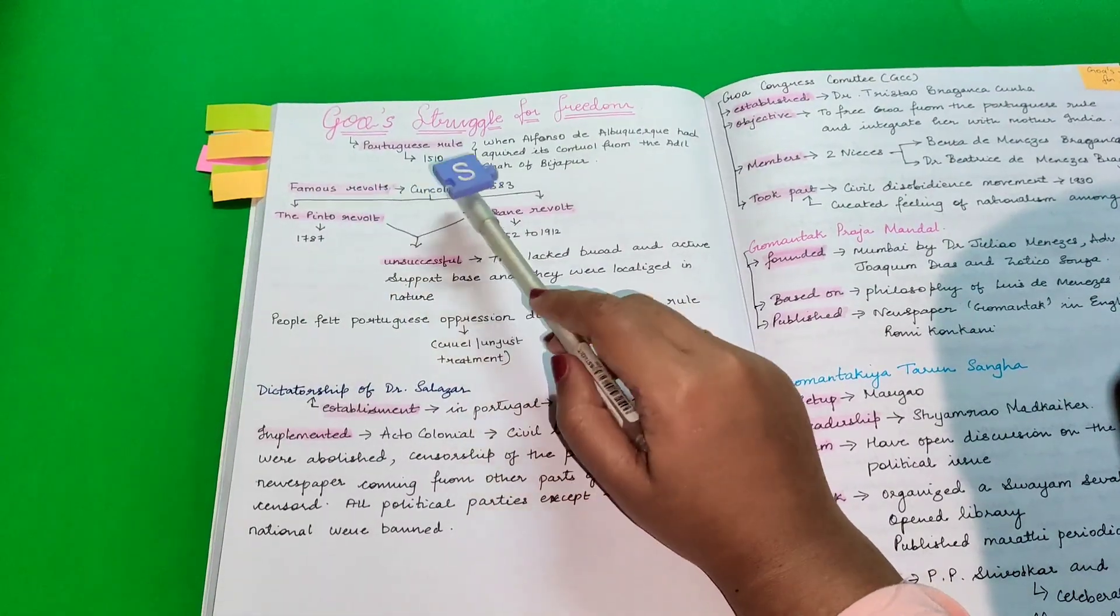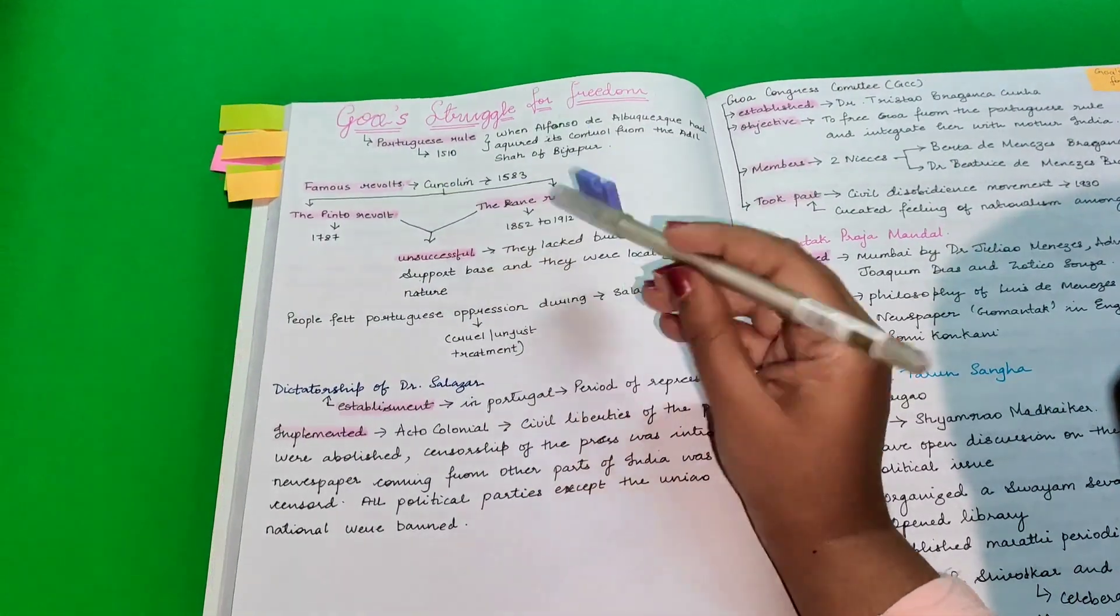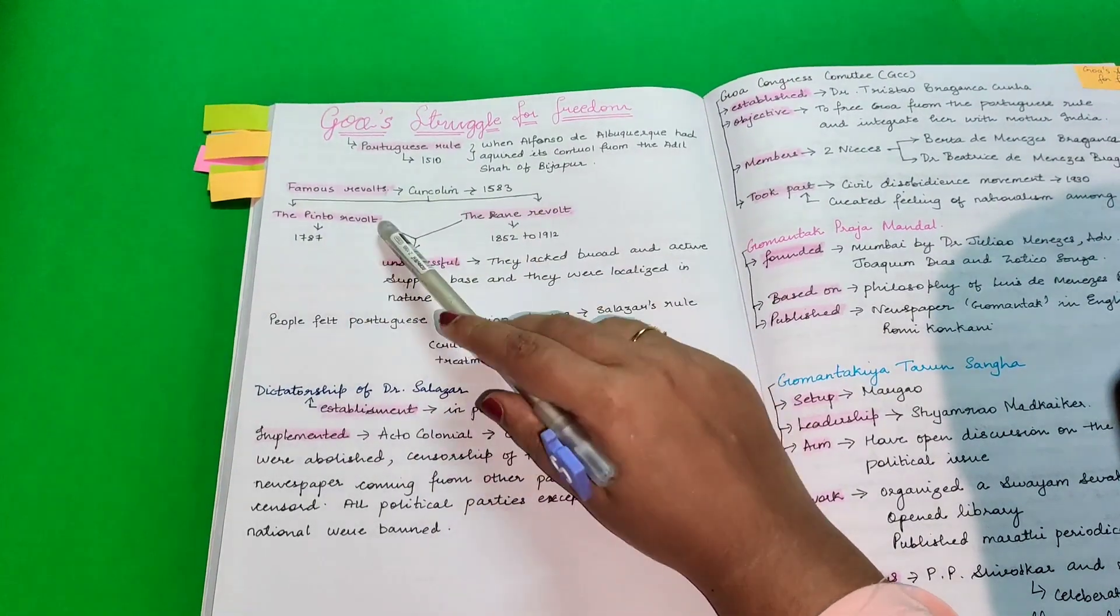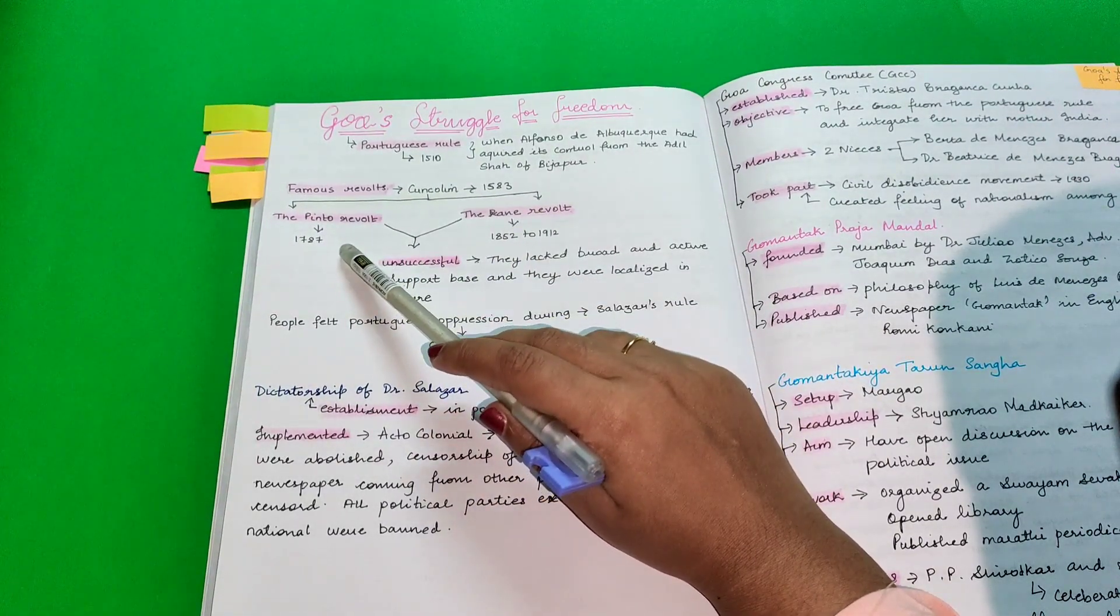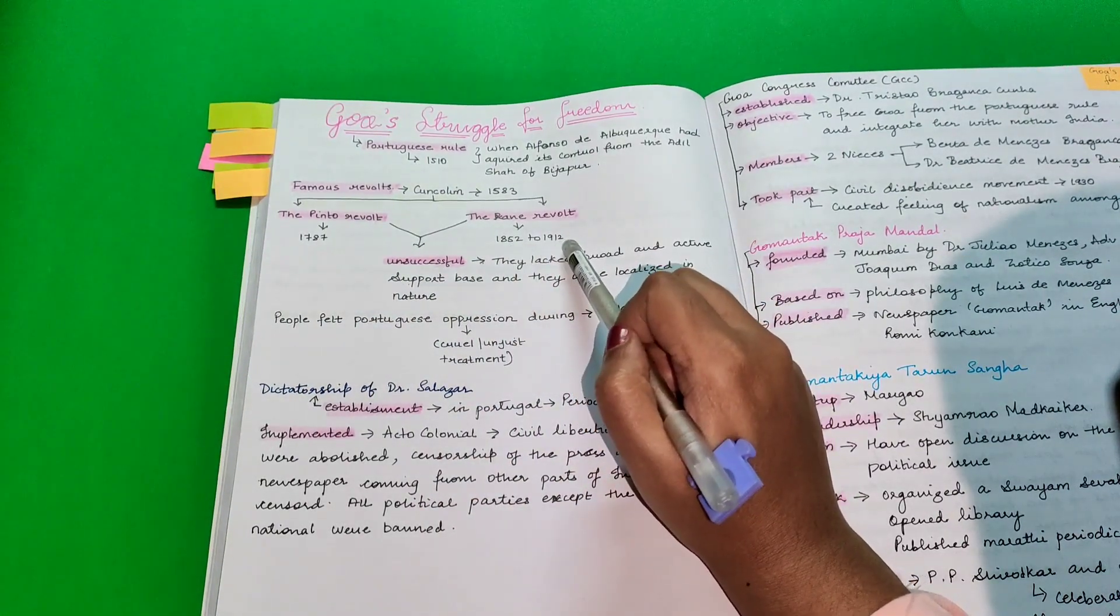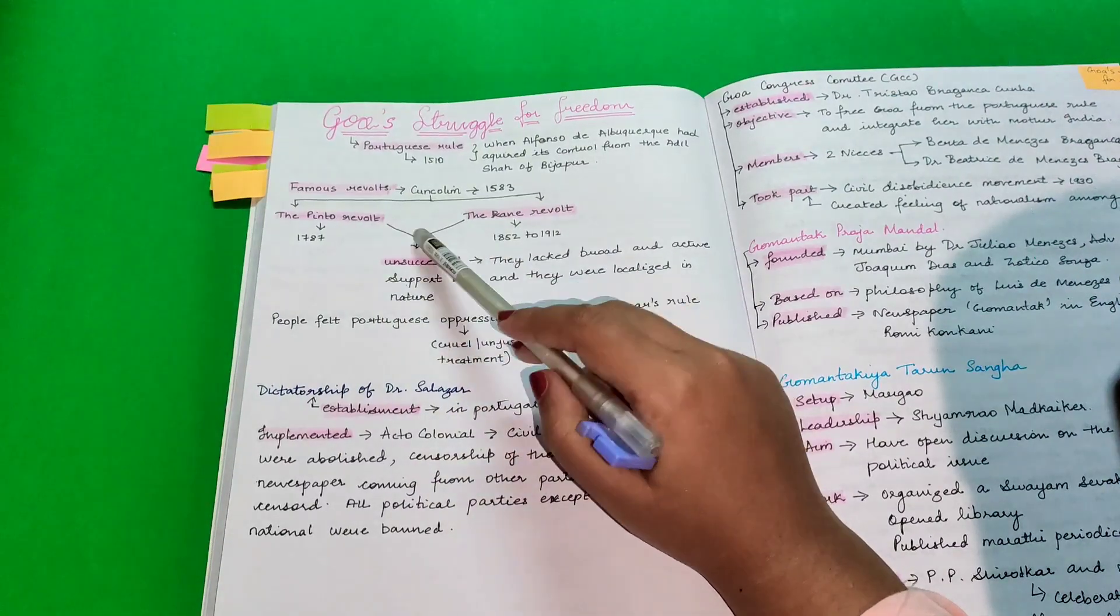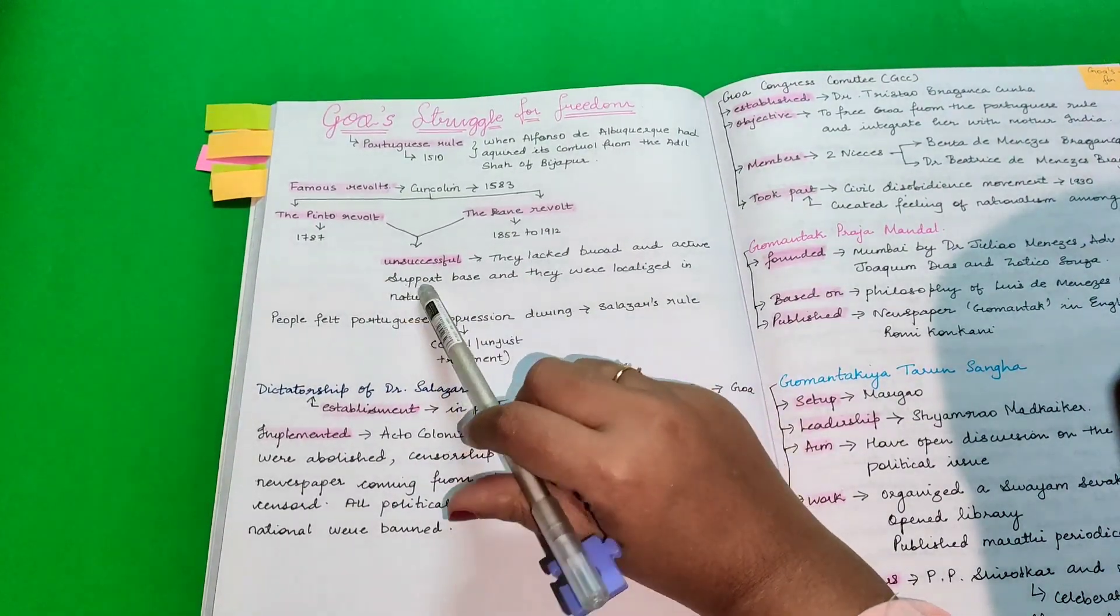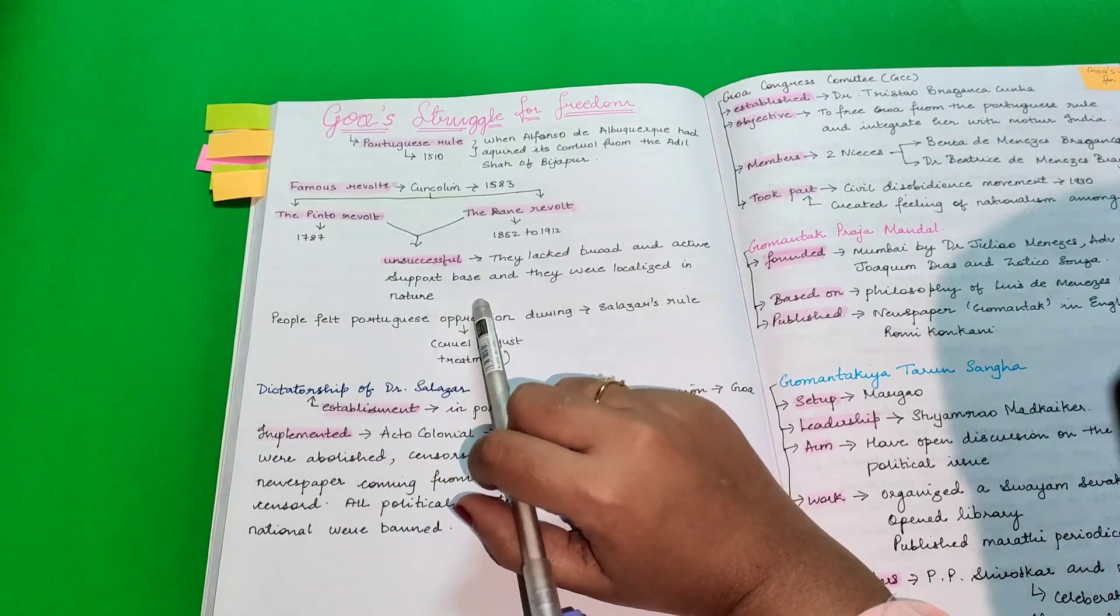The famous revolts that took place in Kuncolim in 1583 were Pinto Revolt and Rane Revolt. Pinto Revolt took place in 1787 and Rane Revolt took place in 1815-1912. These both revolts were unsuccessful because they lacked broad and active support base and they were localized in nature.